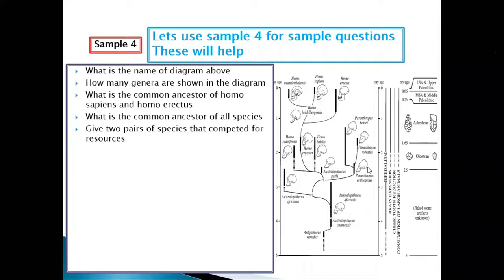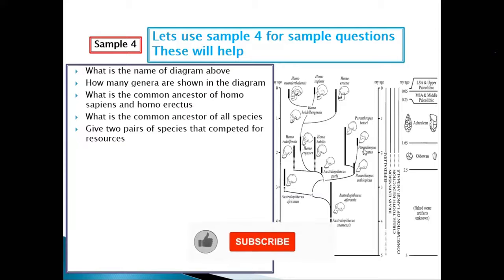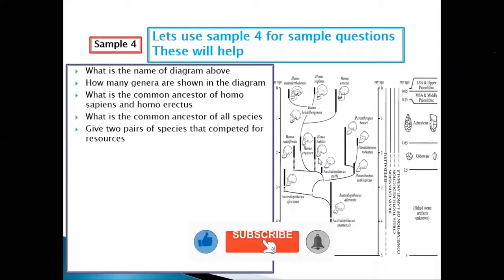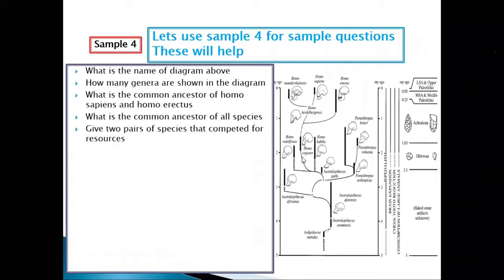Give two pairs of species that competed for resources. Draw a line: Paranthropus boisei competed with Paranthropus robustus, which also competed with Homo habilis and Homo ergaster. Draw the line, and those species overlapping are your answer.